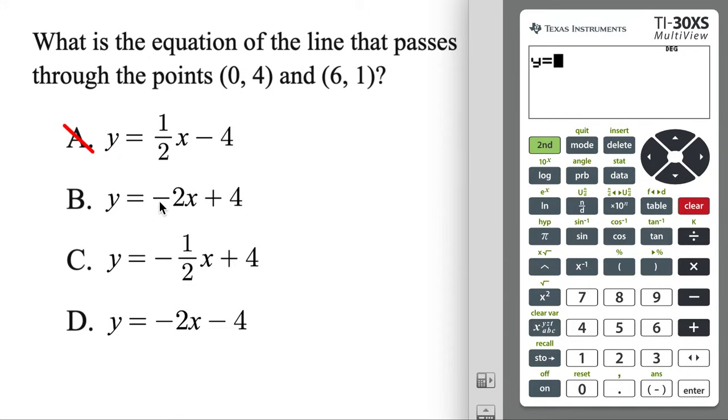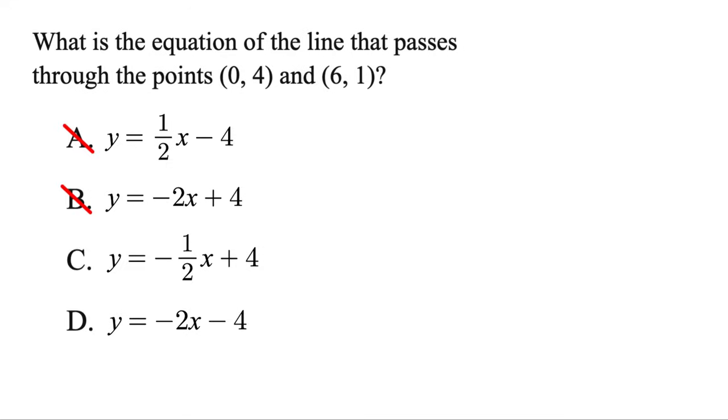So we've got negative. When there's a minus in the beginning, it's always going to be that white button there. Then 2, X plus 4. We're good. Enter five times. And right away, this one does pass through 0, 4 right there. So that's great. But we do want to check when X is 6 if it goes through that 1, but it doesn't. Y is negative 8 instead. So unfortunately, it was closer, but it's not B.